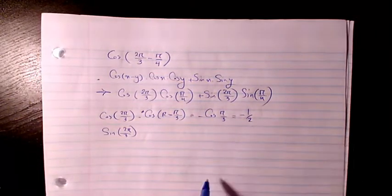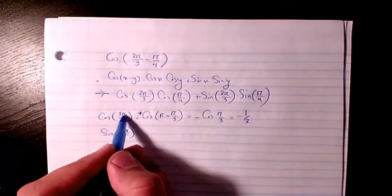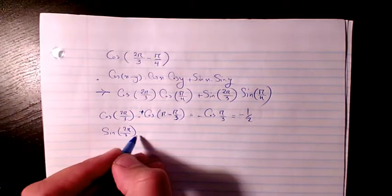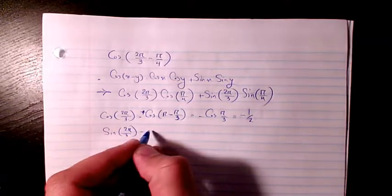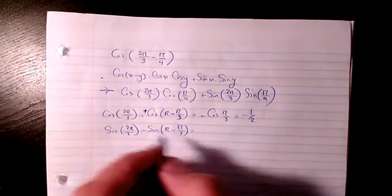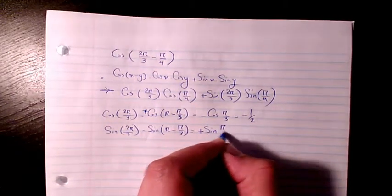Which will be negative 1 over 2. So this one is positive. 2π over 3 is the same as π minus π over 3. And then sine 2π over 3 is going to be the same as sine π minus π over 3. And it will be equal to positive sine π over 3.